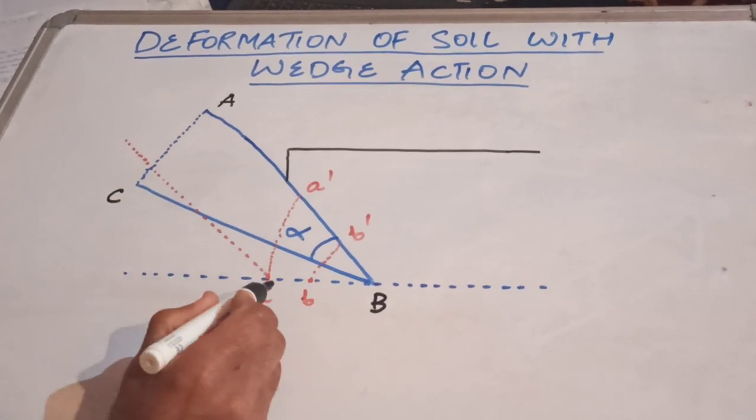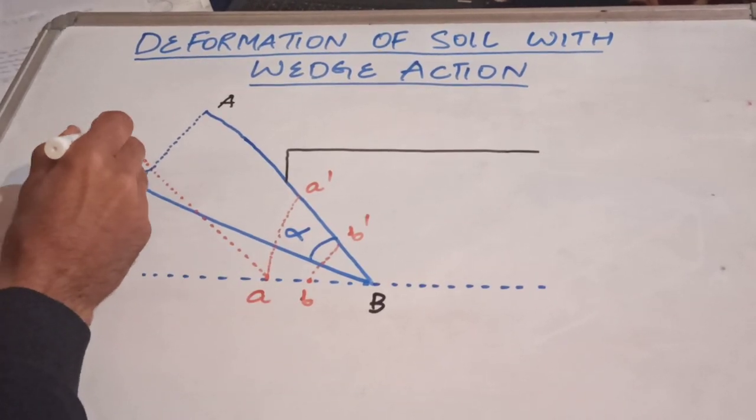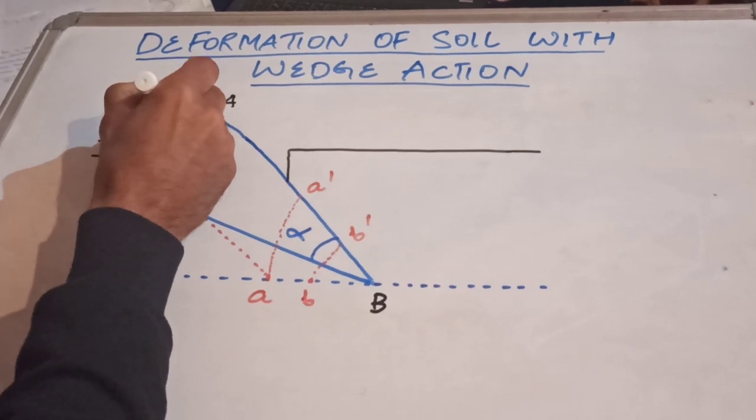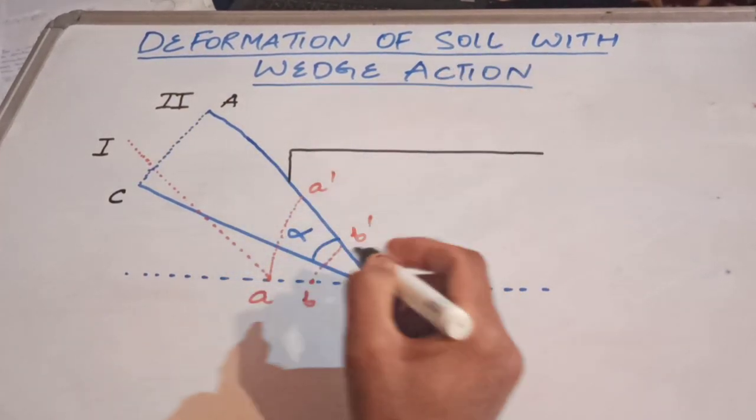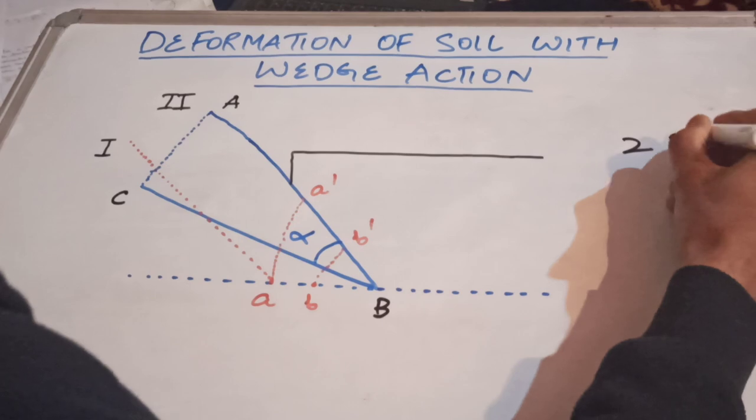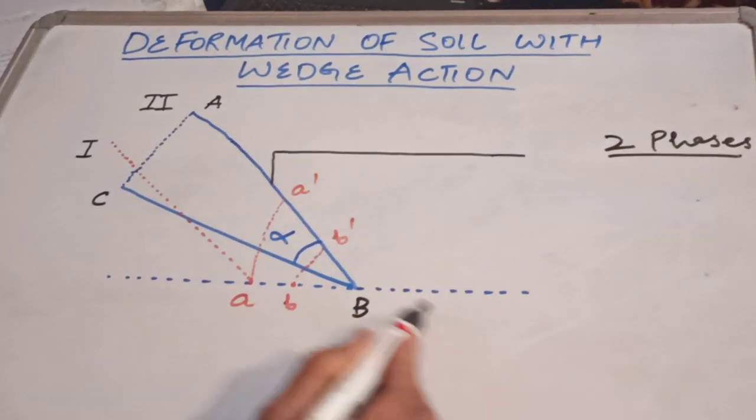This is the deformation of the soil with the wedge action. This is your wedge with points A, B and C. Initially it was at position number one, this red line, and then position number two. The deformation actually occurs in two phases. There are two phases of the process.